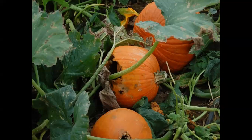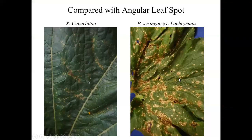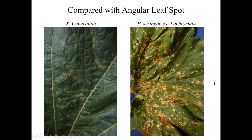Comparing the two bacterial diseases side by side: bacterial leaf spot (Xanthomonas cucurbitae) causes irregular-shaped lesions, a bit of a yellow border, much smaller in size, often running along the veins. Angular leaf spot (Pseudomonas syringae lachrymans) causes much larger lesions that tend to coalesce and stay on the initially infected leaves without a big spread. Whereas when Xanthomonas cucurbitae is in the field, it really spreads from the leaves to the fruit and becomes much worse over the course of the season. A longer rotation is important.